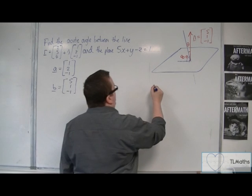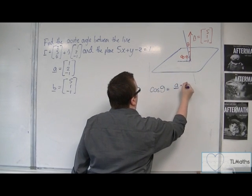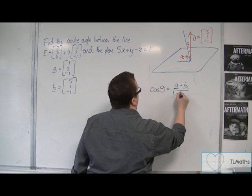And then I can subtract my answer from 90 degrees. So I'm going to be using cos theta is a dot b over mod a mod b.